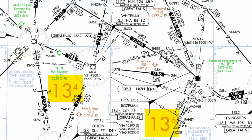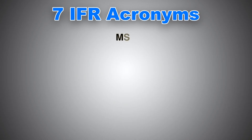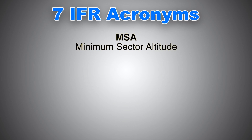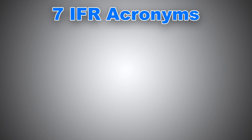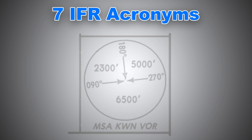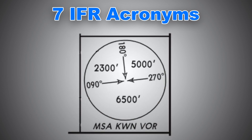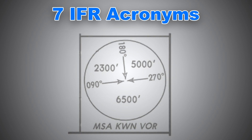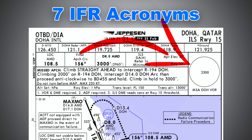Next up is MSA, or Minimum Sector Altitude — also called Minimum Safe Altitude. It is the lowest published altitude which may be used that will provide 1,000 feet of clearance above all objects and obstructions, usually within a 25 nautical mile radius from a navigational aid, mostly a VOR. MSA is always published in approach plates, SIDs, and STARs.